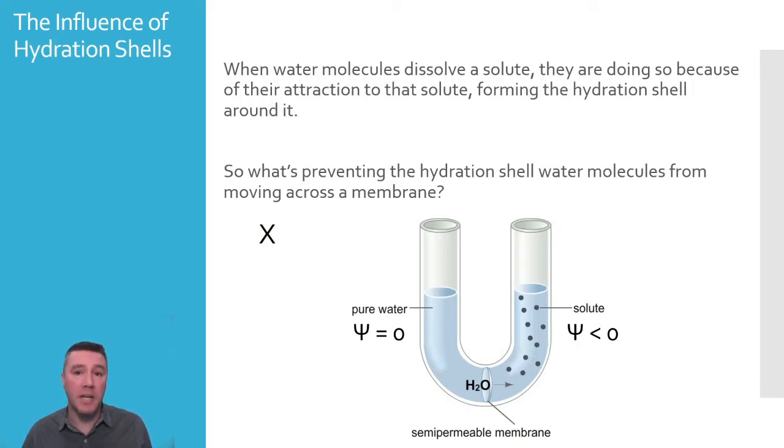On the right, initially, there would have been an equal quantity of water molecules. But, as solutes are added, it requires Y number of water molecules to form a hydration shell around each of those 11 solute particles. Therefore, the number of water molecules not participating in hydration shells on the right is something less than X.